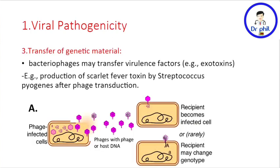The third and final mechanism is the transfer of genetic material, specifically in bacteria. Bacteriophages are a special kind of virus that infects bacteria, and they may transfer virulence factors such as exotoxins. An example is the scarlet fever toxin produced by Streptococcus pyogenes after phage transduction.